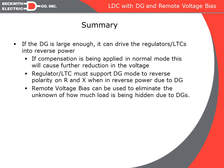In summary, if DG is large enough it can drive regulators into reverse power. Even when not in reverse power, traditional line drop compensation will undercompensate because the DG hides load current from the regulator's CTs. Due to the dynamic, rapidly changing output of DG sources such as solar and wind, the most accurate approach is remote voltage bias — actually monitoring the end-of-line voltage and calculating real-time voltage drop, rather than estimating from load conditions alone.